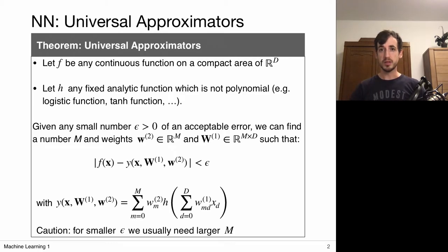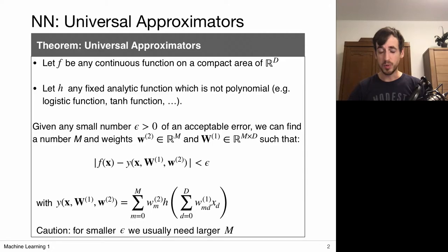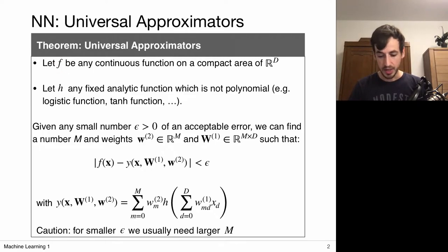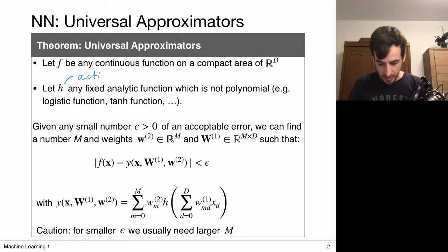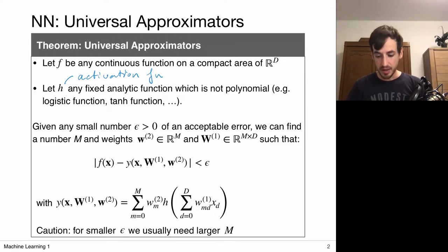This slide shows the universal approximation theorem, and we're not going to prove it here — we're just going to use it to gain some understanding of what it implies. So let's start by reading what it says. We're dealing with a function f, which can be any continuous function on a compact area R^d — this is the function we're going to approximate with the neural network. Such neural networks are based on linear layers and activation functions; let h be the activation function, which can be anything but must not be polynomial.